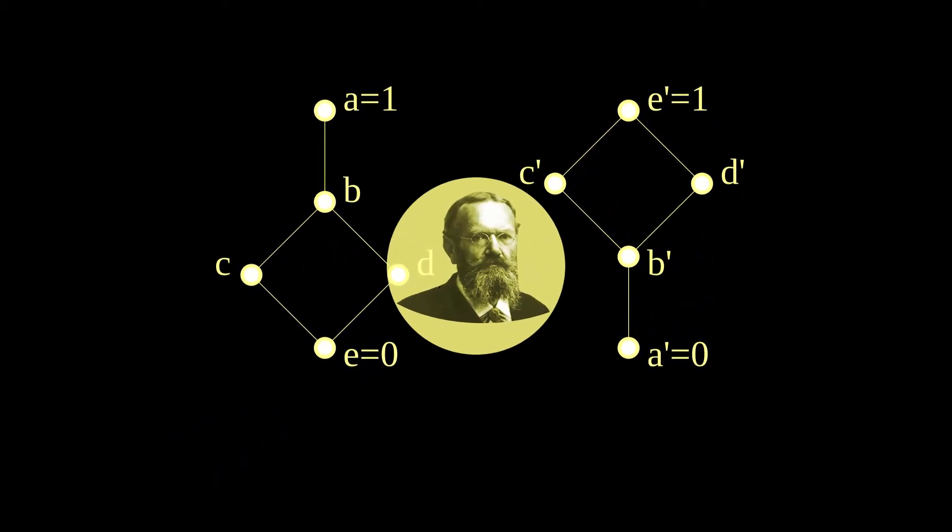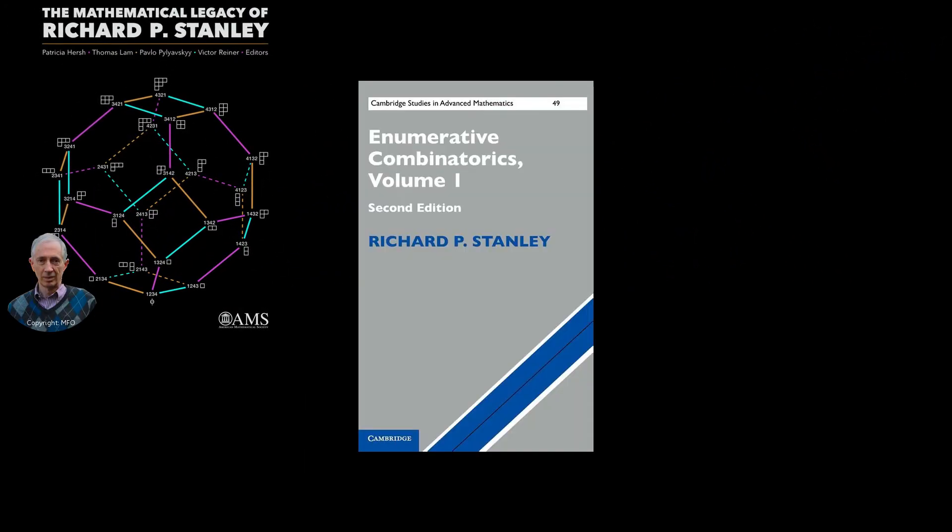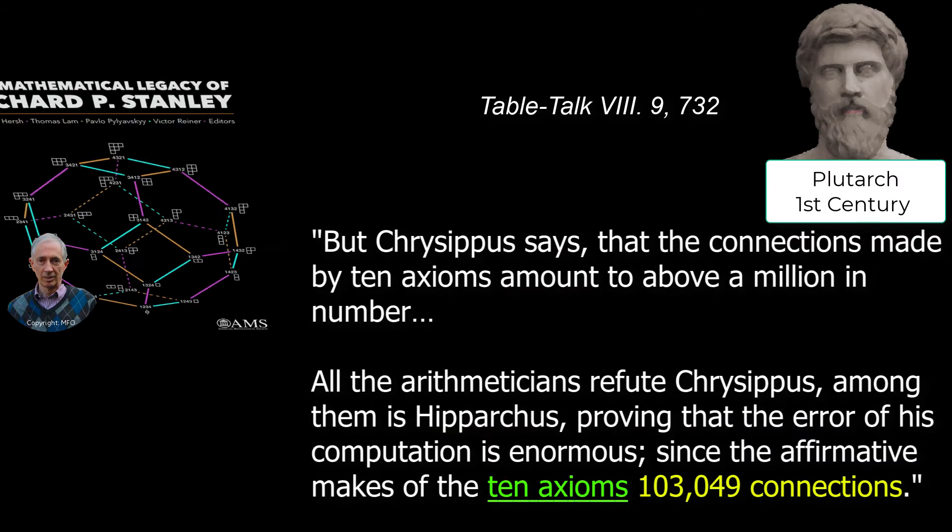I mentioned near the start that Schroeder was one of mathematical logic's top dogs. One of the top dogs of combinatorics is MIT's Richard Stanley. He wrote the definitive textbook, Enumerative Combinatorics. In the first volume, he included an intriguing statement from the ancient Greek historian Plutarch.